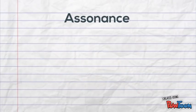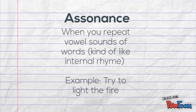This next one kind of sounds like a bad word, but it's not, and it's actually very similar to alliteration. Assonance is when you repeat the vowel sounds of words, kind of like an internal rhyme. For example, try to light the fire. You could also add on Friday, where it's that I sound.